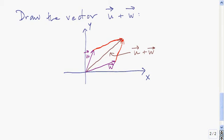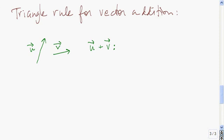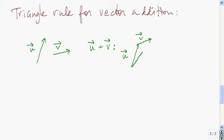There's another way of viewing vector addition geometrically, and that's using a triangle. Here's how the triangle rule works. I have vector u and I want to add vector v to it. I start by taking vector u, and then I take vector v and put the tail of it right at the head of vector u. Then the vector u plus v is this side of the triangle — it goes from the tail of u to the head of v.